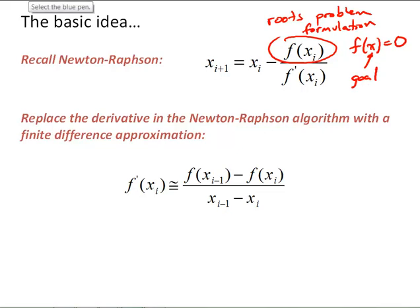So, one of the issues with Newton-Raphson that I identified at the end of that video was this calculation of the analytical derivative and the fact that sometimes that can be a bit cumbersome. And the basic idea of the secant method is to replace the derivative in the Newton-Raphson algorithm with a finite difference approximation.